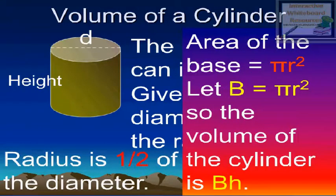Area of the base equals pi r squared. Let B equal pi r squared. So the volume of the cylinder is base times height.